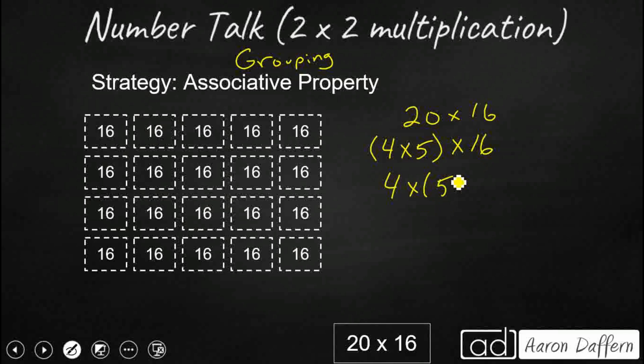the associative property just says, you know what, I'm going to shift that. I'm going to shift the parentheses. I want 5 groups of 16, which is what I have right here. I've got 5 groups of 16. 1, 2, 3, 4, 5.